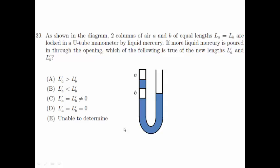Welcome to Singapore Junior Physics Olympiad 2012 general round question 39. As shown in the diagram, two columns of air A and B of equal lengths are locked in a U-tube manometer by liquid mercury. If more liquid mercury is poured in through the opening, which of the following is true of the new lengths L'A and L'B?